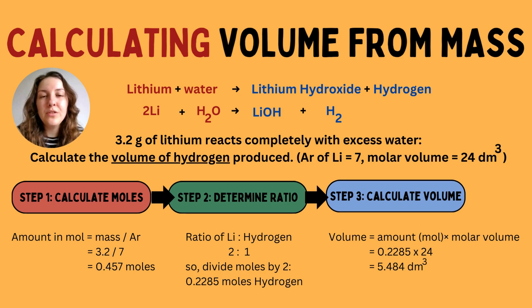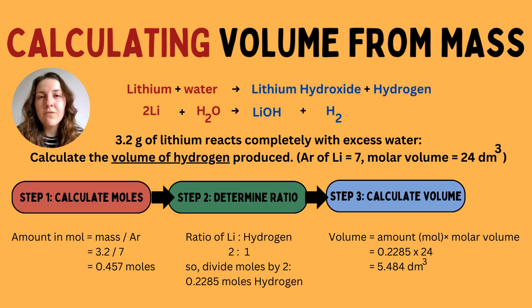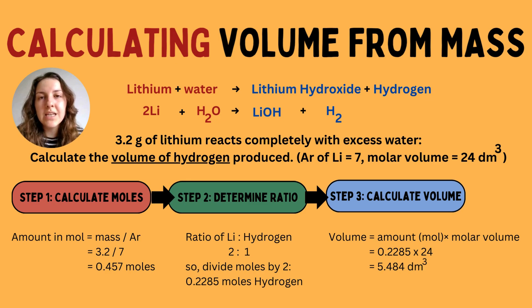The question is: 3.2 grams of lithium reacts completely with excess water — calculate the volume of hydrogen produced. They've given us the relative atomic mass of lithium, which is 7, found from the periodic table by looking for the mass number, the biggest number. The molar volume, as we know, is 24 decimetres cubed. These clues in the question indicate exactly what steps you need to carry out.